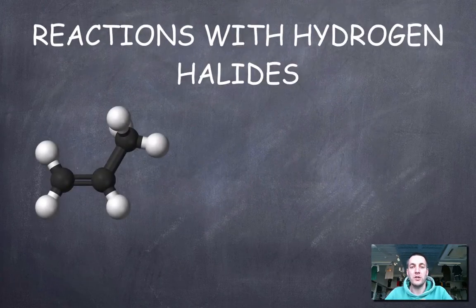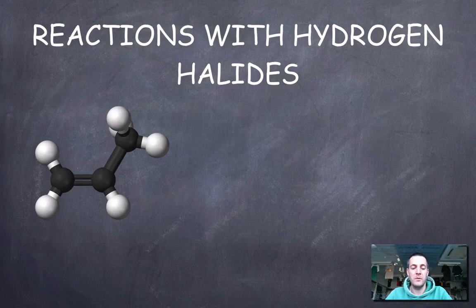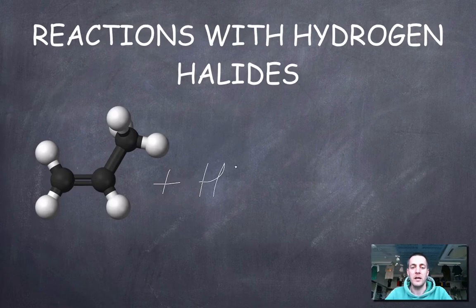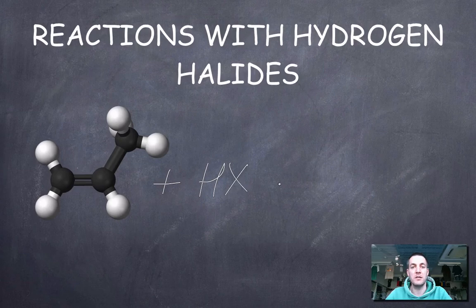Right, moving on to hydrogen halides. Now, I've deliberately drawn an unsymmetrical alkene here because what we're going to be doing is adding any hydrogen halide. So that could be HBR, HCL, HI, but I'm going to call it HX so that I'm not specifying what the X is.